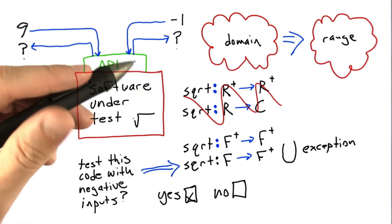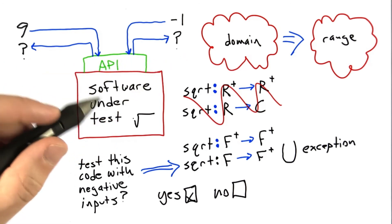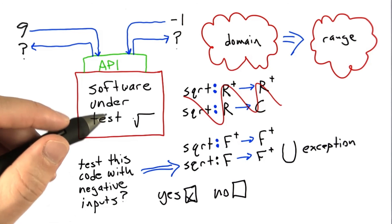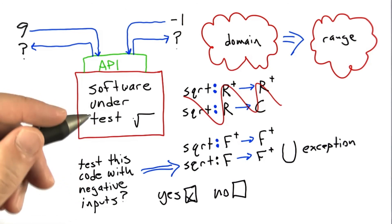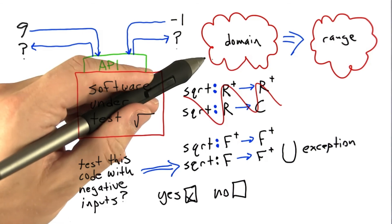So, to reiterate, domain restrictions are a perfectly valid technique for keeping code simple in the case where these kind of assumptions about an input domain are actually reasonable.